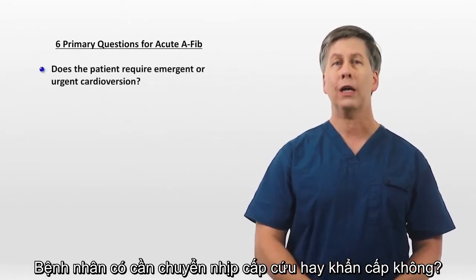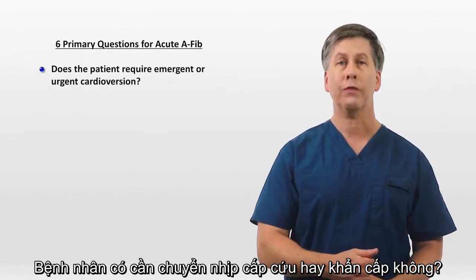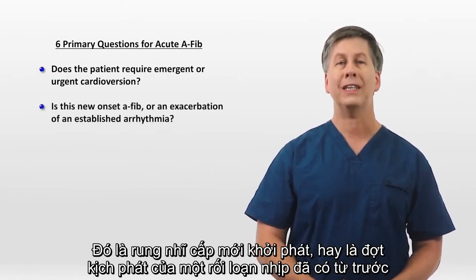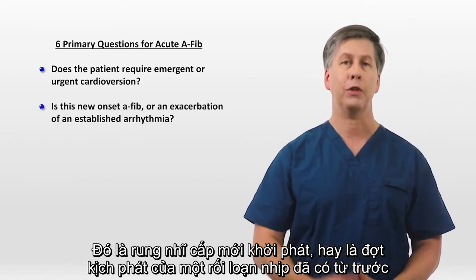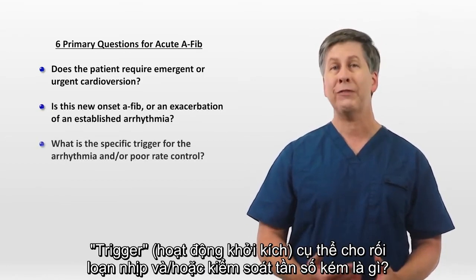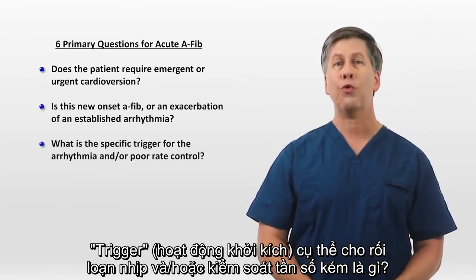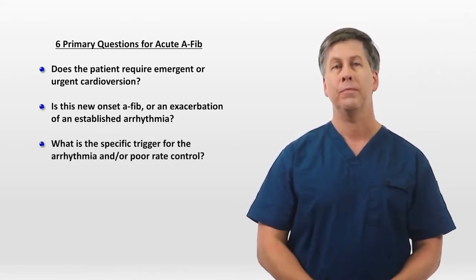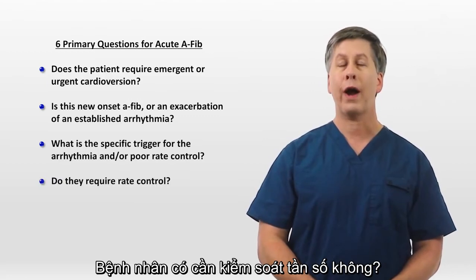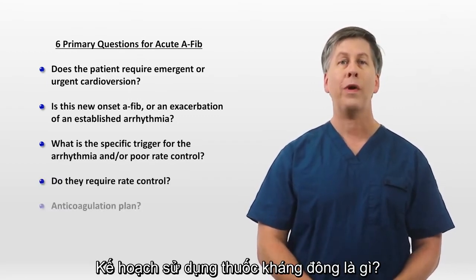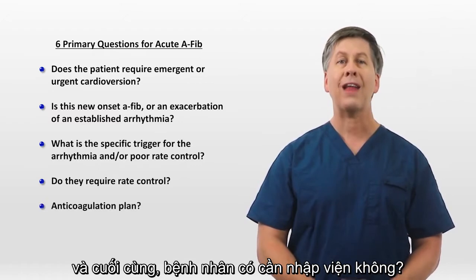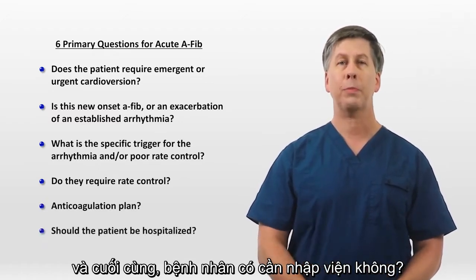Does the patient require either emergent or urgent cardioversion? Is this new onset AFib or an exacerbation of an established arrhythmia? What is the specific trigger for the arrhythmia and/or poor rate control — that is, why is it happening at this specific moment? Does the patient require rate control? What is the anticoagulation plan? And last, should the patient be hospitalized?